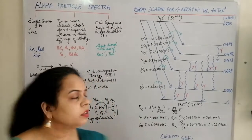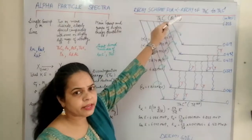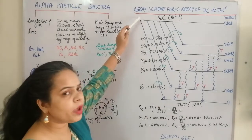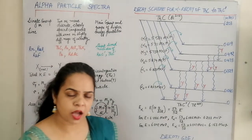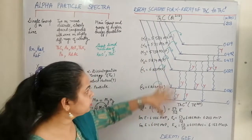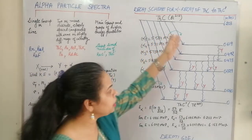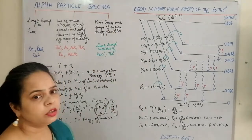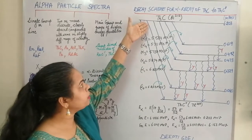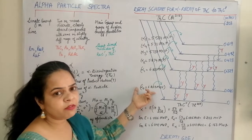Now let us look at the spectral decay of the alpha decay of thorium C to thorium C double dash. Thorium C is bismuth-212, the parent nucleide, and thorium C double dash is thallium-208. Bismuth-212 decays to thallium-208, and not only one type of alpha particle with a particular energy is emitted — closely spaced decay schemes are observed where alpha particles with many different energies appear.